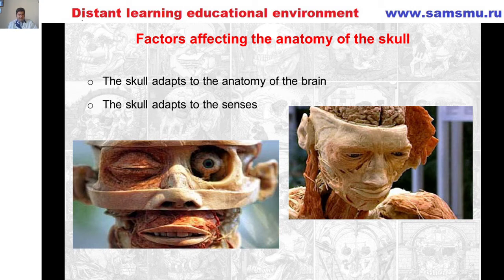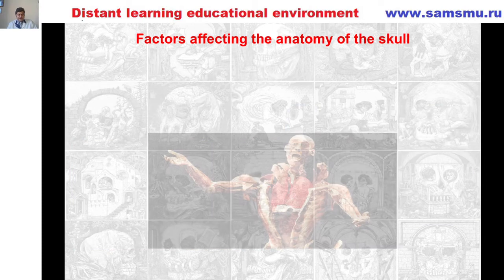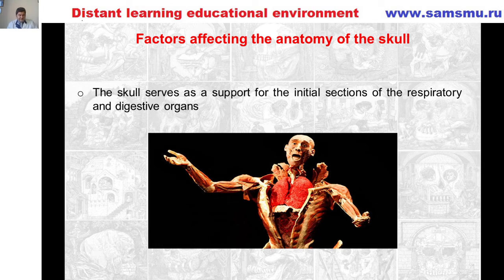Within the skull — before the skull itself — the sense organs: organ of taste, hearing, smell, and balance begin to form. The skull adapts to the senses, not vice versa. The skull serves as a support for the initial section of respiratory and digestive organs. Parts are formed to ensure the functions of chewing, swallowing food, and breathing. The complexity of skull anatomy is due to the fact that in the course of ontogenesis in humans, some stages of phylogenesis are briefly repeated.